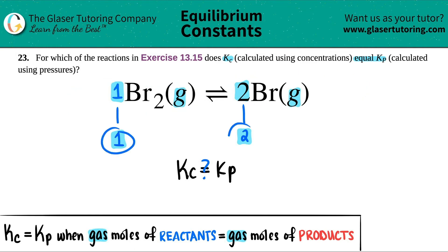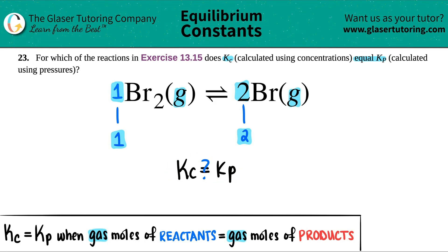Since one does not equal two, does Kc equal Kp? The answer is no. Because for them to equal each other, the gas moles have to equal each other. One does not equal two, therefore Kc does not equal Kp.